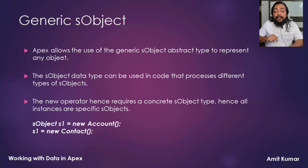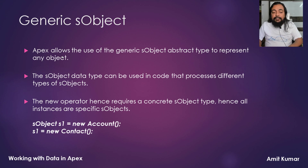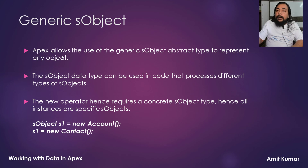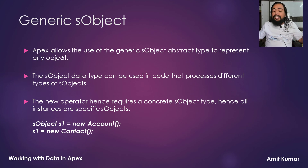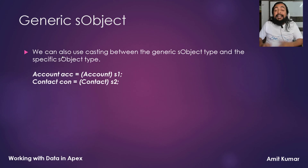If you want to create an instance for it, you have to use any concrete Salesforce object. For example, if I am creating an s1 variable of generic sObject — that is, sObject s1 — with the new operator I have to use a concrete Salesforce object. This can be Account, Contact, Lead, Opportunity, or any other custom object. Make sure you cannot create an instance directly; you have to use a concrete Salesforce object.